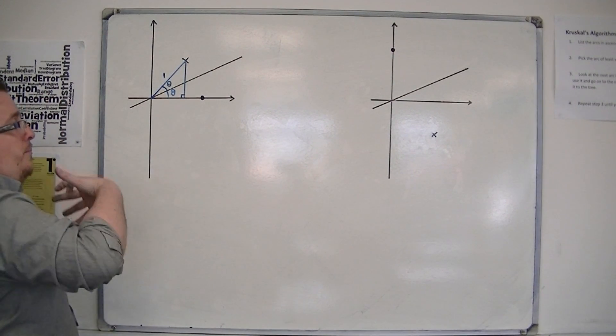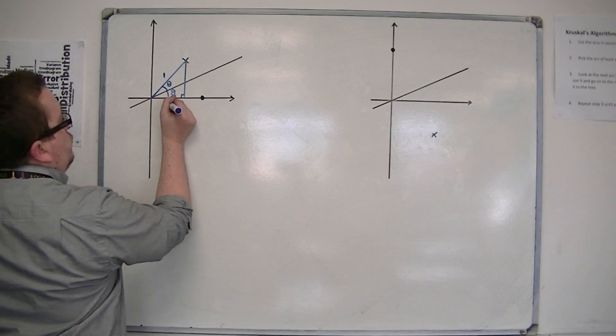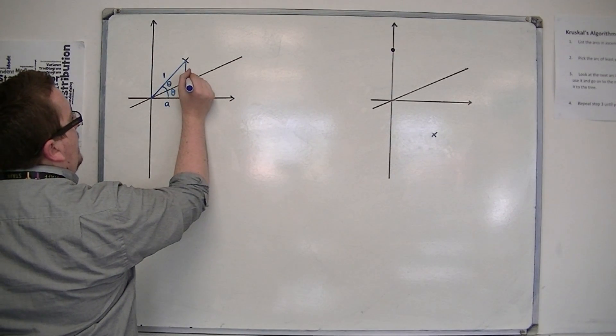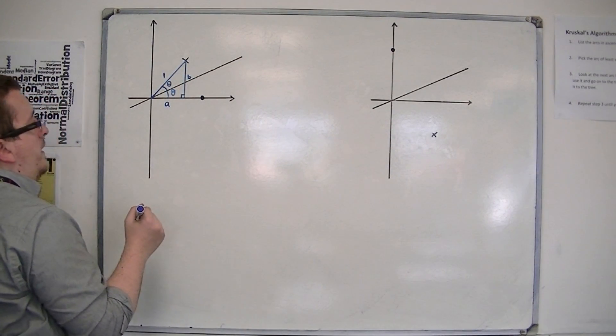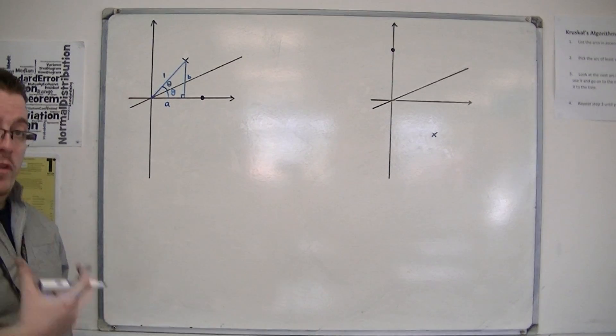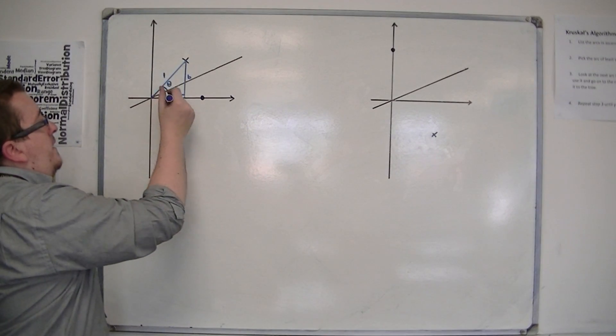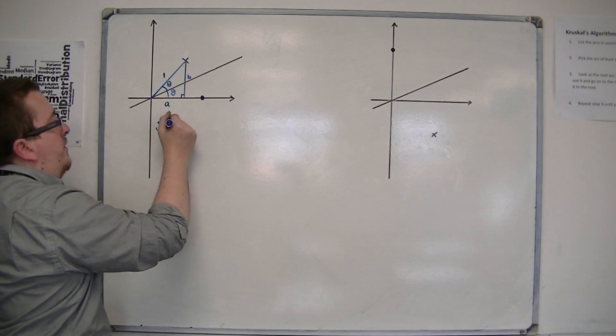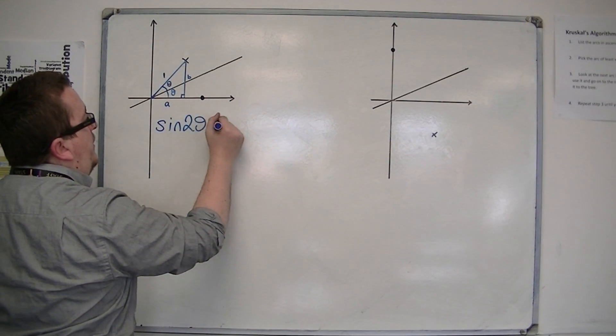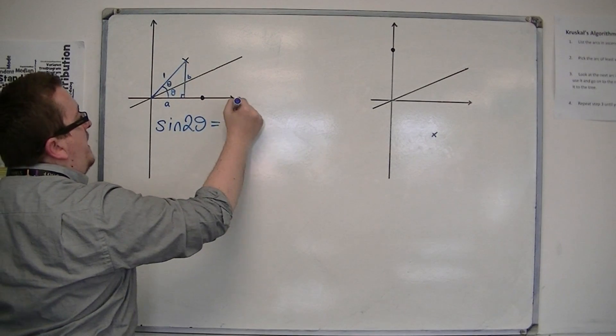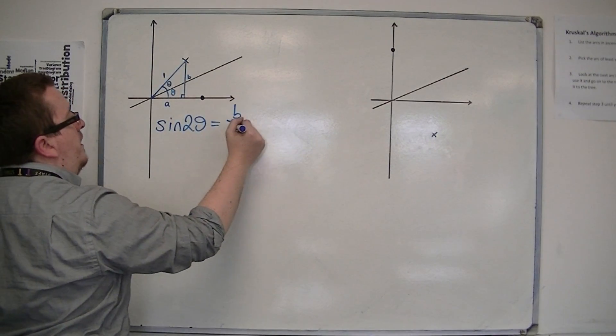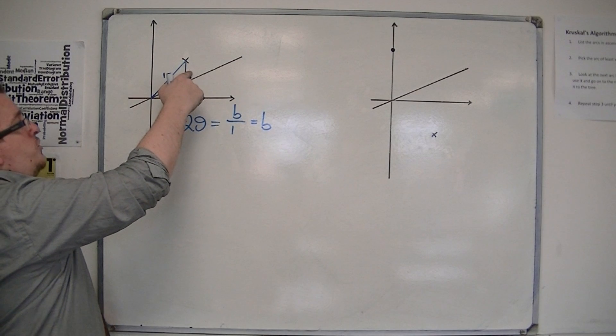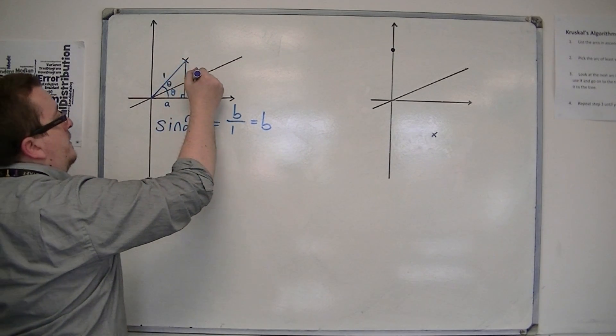If the triangle has a base of length a and a height of b, then using trig, that would mean that sine of that whole angle, which is going to be 2 theta, is equal to the opposite b over the hypotenuse 1. So that means that b is actually sine of that whole angle.